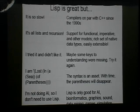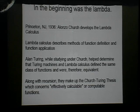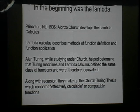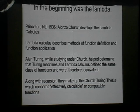In the beginning was the Lambda. Dateline: Princeton, New Jersey, 1936. Alonzo Church was studying at Princeton along with interesting people like Kurt Gödel. Alan Turing studied under him, and Church developed the Lambda Calculus. A year or two later, Alan Turing worked out that the Lambda Calculus was equivalent to his Turing machines — they defined the same class of functions and were therefore equivalent. This, along with recursion, makes up the Church-Turing thesis, which covers what a computer can solve. Even though it's still a thesis we can't prove, we've built all our computing systems on it.